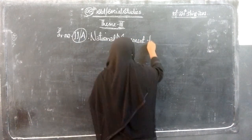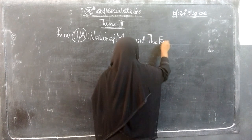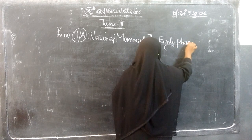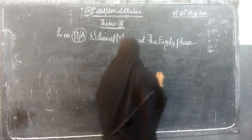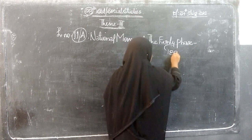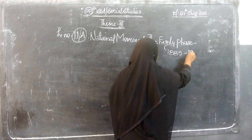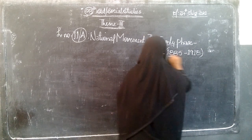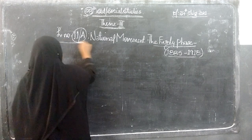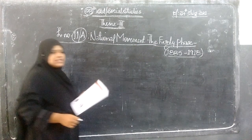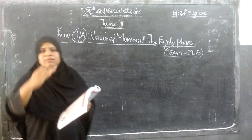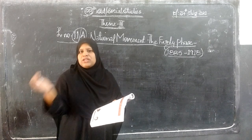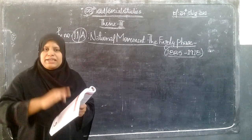This lesson is about the early phase, which begins in the year 1885 towards the year 1980. Regarding this aspect, we have been discussing in the previous class the timeline chart. Before 1885, the very first event was the Indian Mutiny — the Indian Soldiers' Revolt of 1857.